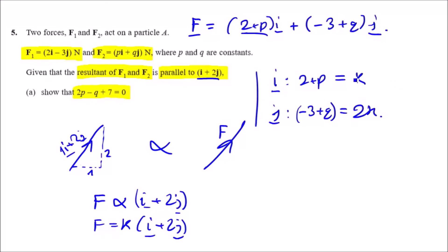Equate them and we're going to end up getting this result. If we equate both equations, we're going to have 2 times (2 plus p) equals minus 3 plus q.